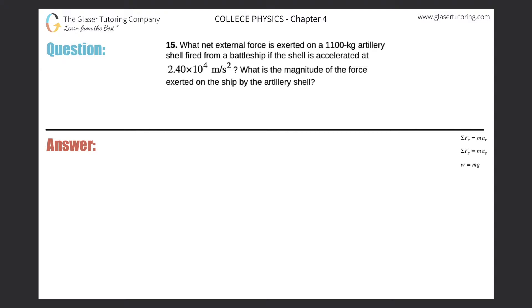Number 15. What net external force is exerted on a 1,100 kilogram artillery shell fired from a battleship if the shell is accelerated at 2.4 times 10 to the 4 meters per second squared?